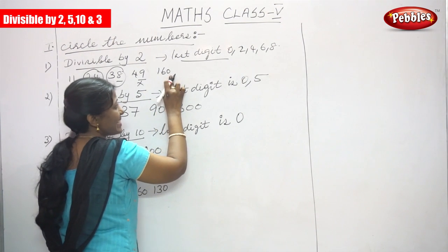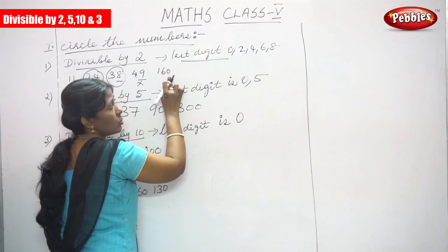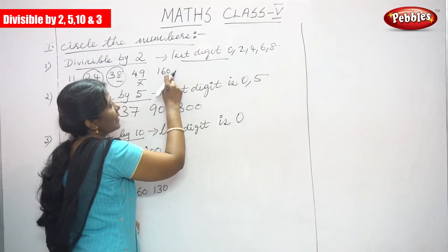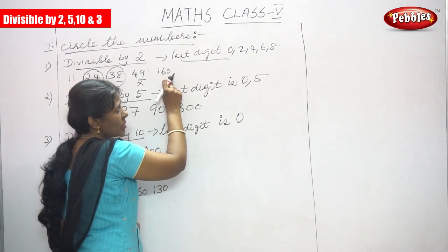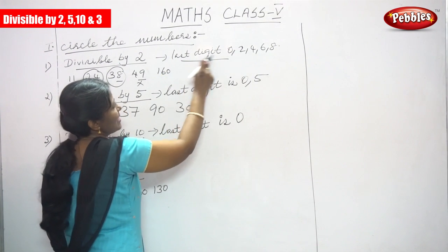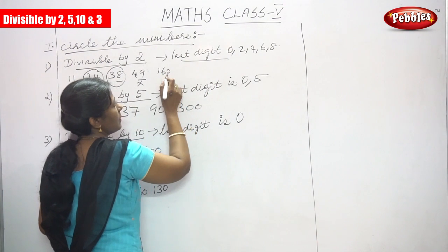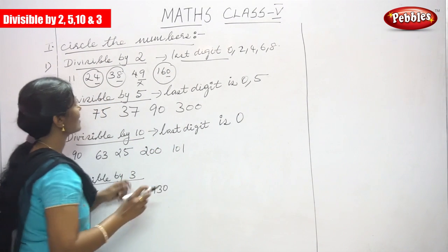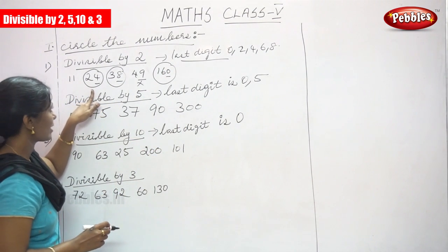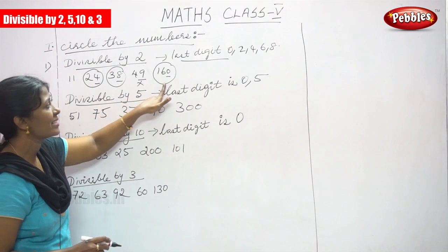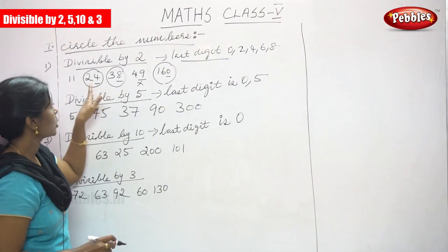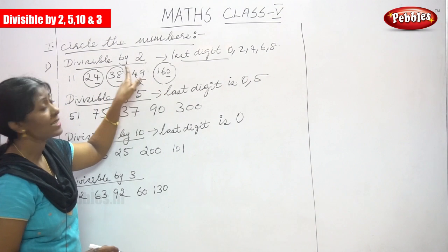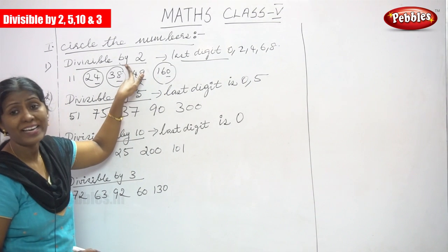The next is 160. The last digit is 0, so it ends with 0. The last digit ends with 0, so it is divisible by 2. Circle the number. So 24, 38, and 160 are divisible by 2.